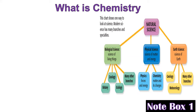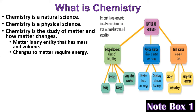This is note box one. So on your note catcher, you should be taking notes for this slide in note box one. We see a graphic organizer: natural science is broken into three parts — biological science, physical science, and earth science. Physical sciences are broken up into physics and chemistry, and chemistry is the study of matter and its changes. Chemistry is a natural science, a physical science, the study of matter and how matter changes.